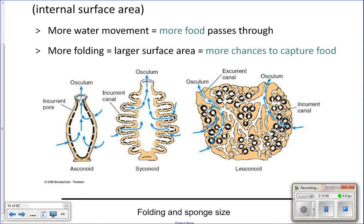This would be a leuconoid body shape. The biggest sponges are vase sponges that you could probably sit in — they're that large.